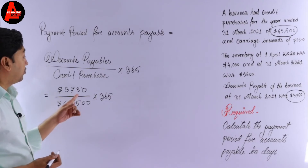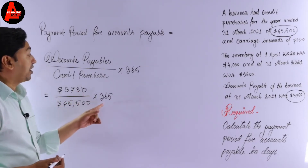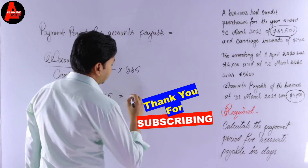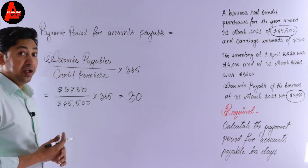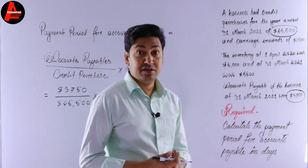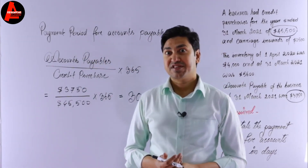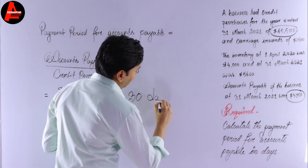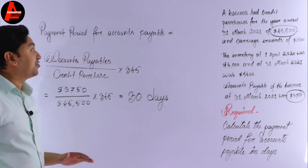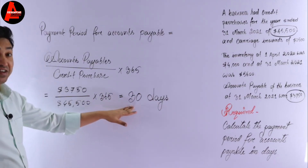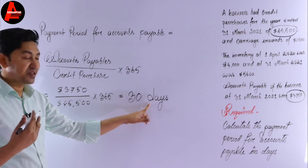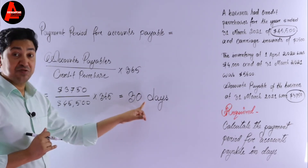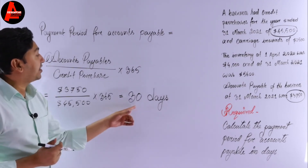If you multiply 3,750 by 365 and divide by 45,500, the answer is 30. Now, what is the unit? It is not times, not percentage, not dollars. You must write 30 days. Many students get the calculation correct but write the wrong unit — percentage or dollars — which is incorrect.